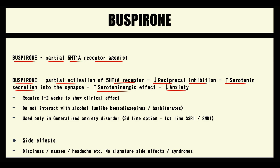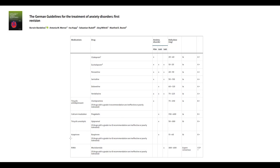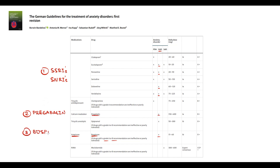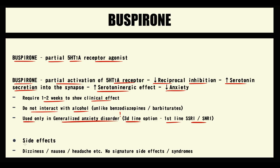Buspirone, like other serotonin drugs, requires one to two weeks to show clinical effect. Buspirone does not interact with alcohol, unlike benzodiazepines or barbiturates. According to current guidelines, buspirone is indicated only in generalized anxiety disorder and only as a third-line option. The first-line drugs are selective serotonin reuptake inhibitors and serotonin-norepinephrine reuptake inhibitors, the second line is pregabalin, and only the third line is buspirone. Buspirone has no significant specific side effects or withdrawal syndrome; it can cause dizziness, nausea, and headache, but nothing specific.